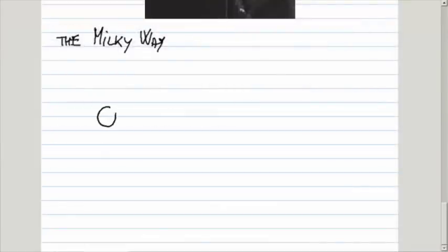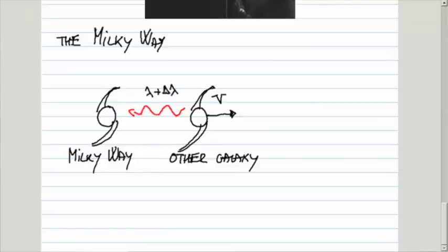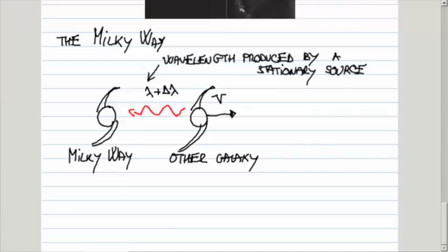For instance, if here is the Milky Way galaxy and here is another galaxy moving away from us with some speed V, the wavelength of the light that it produces and it's traveling to us, we perceive to be increased. Lambda would be the wavelength that we would observe if the other galaxy was not moving relative to us, but because the source is moving away from us, we detect that wavelength to be slightly longer. This delta lambda is the shift.